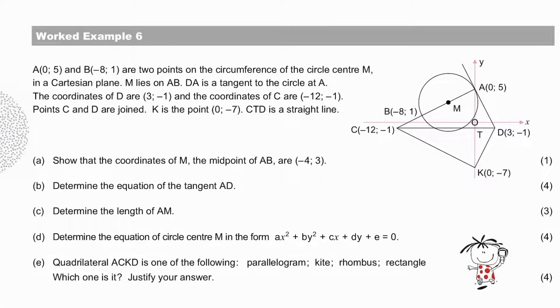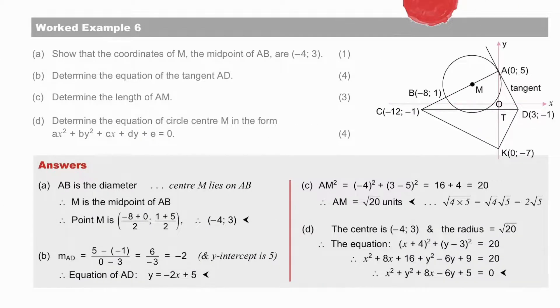Pause to try worked example 6. Pause to check your answers. In a, we are asked to show that the coordinates of the midpoint M are minus 4, 3. We would have preferred to have written them down by inspection. But when given the instruction to show, that is when we need to reason and show detail as we have done.